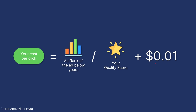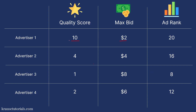Let me cover this with an example. Advertiser 1 has a quality score of 10 and a max bid of $2, resulting in an ad rank of 20. Advertiser 2 has a quality score of 4 and a max bid of $4, giving an ad rank of 16. Advertiser 3 has a quality score of 1 and a max bid of $8, giving an ad rank of 8. You want the highest ad rank to rank first on Google. This table shows that by improving your quality score you can save a tremendous amount on potential ad costs.